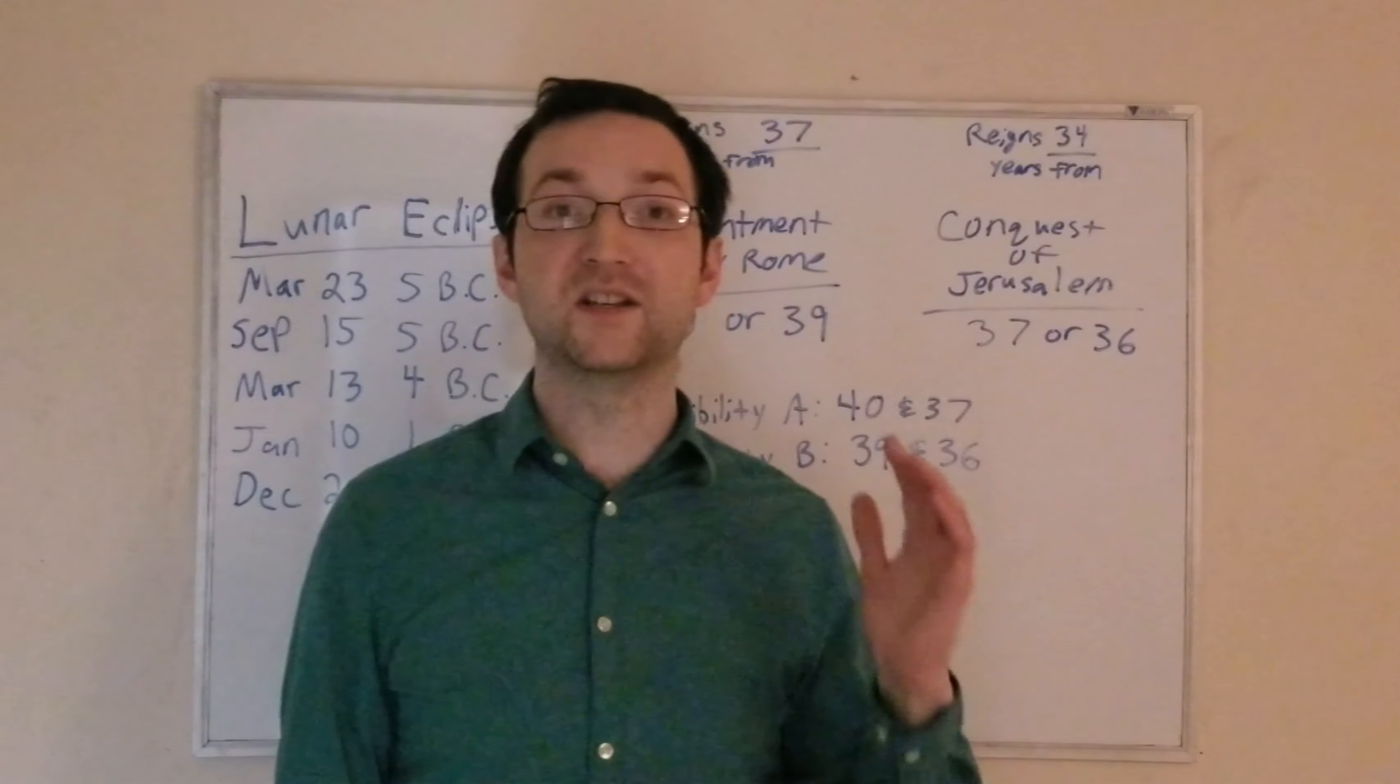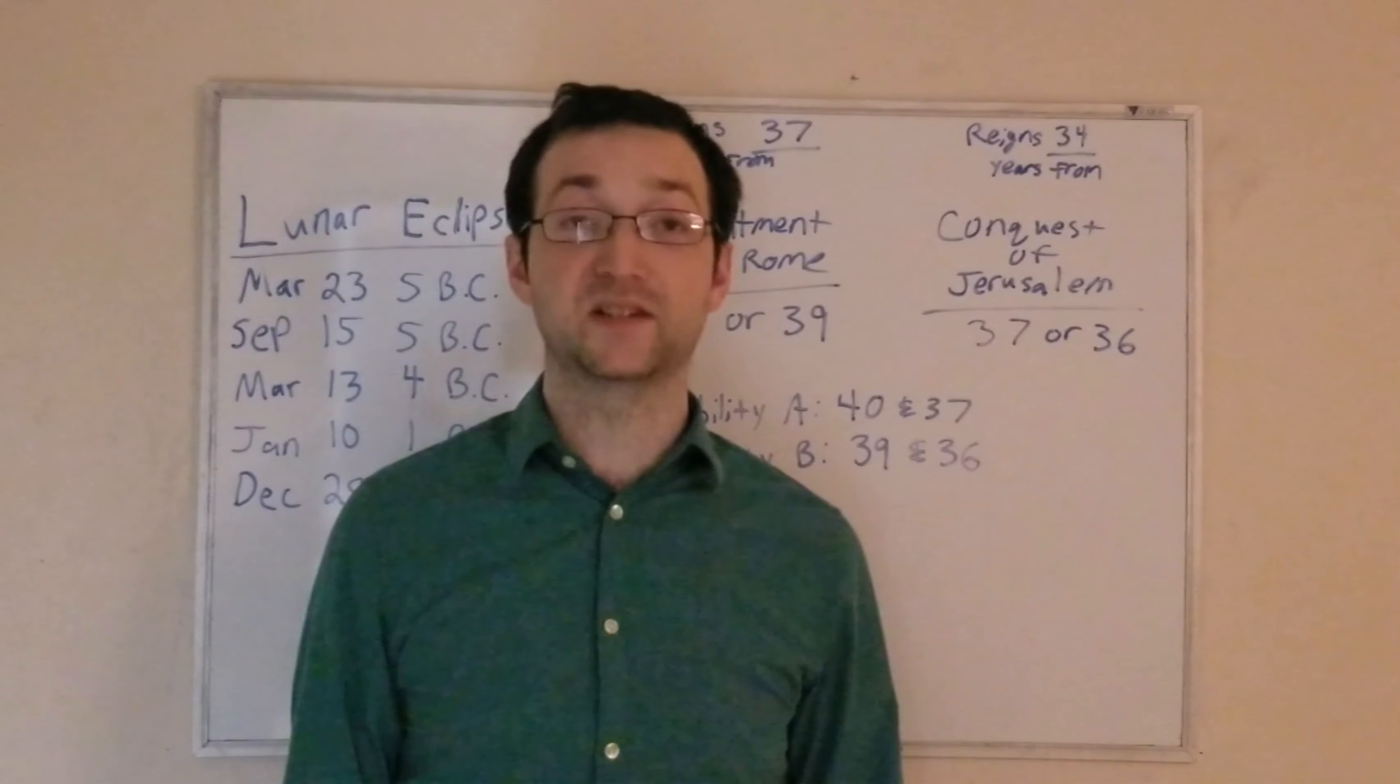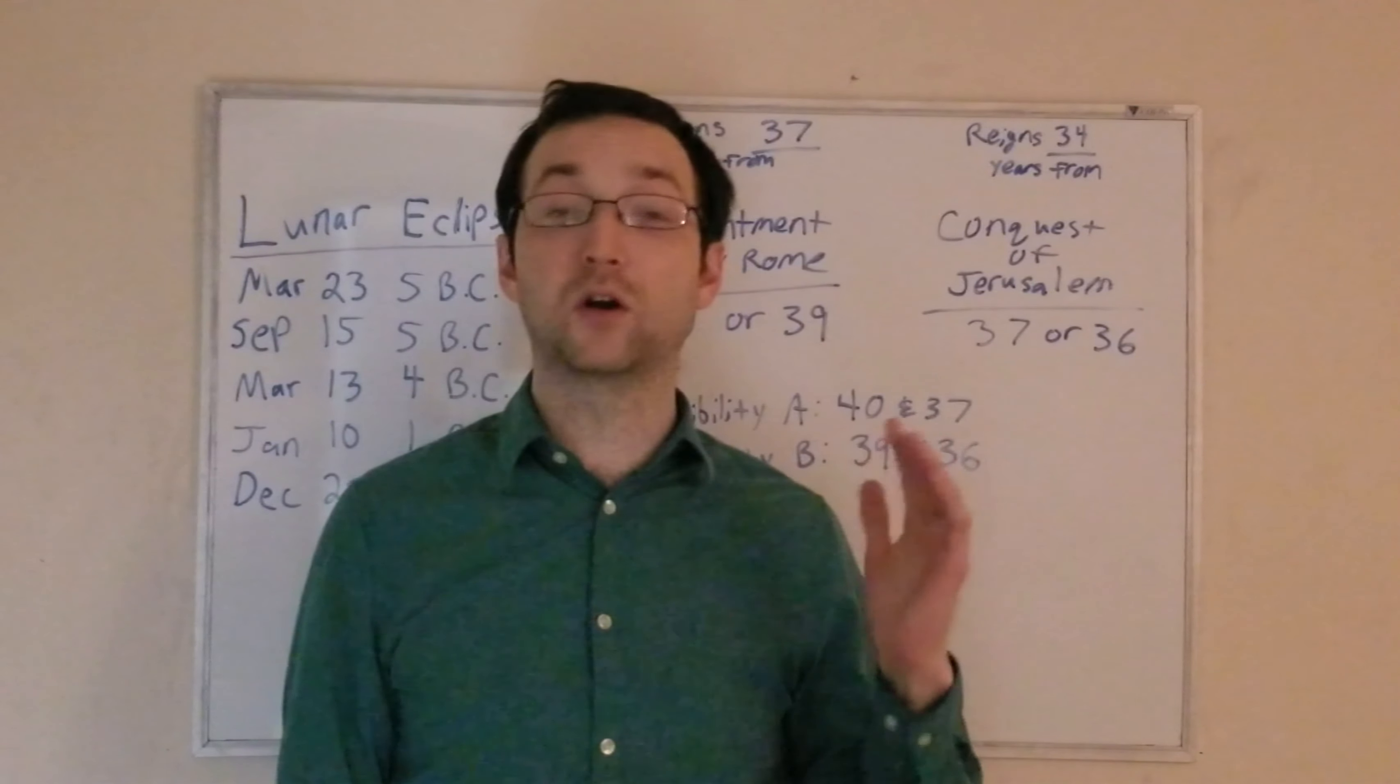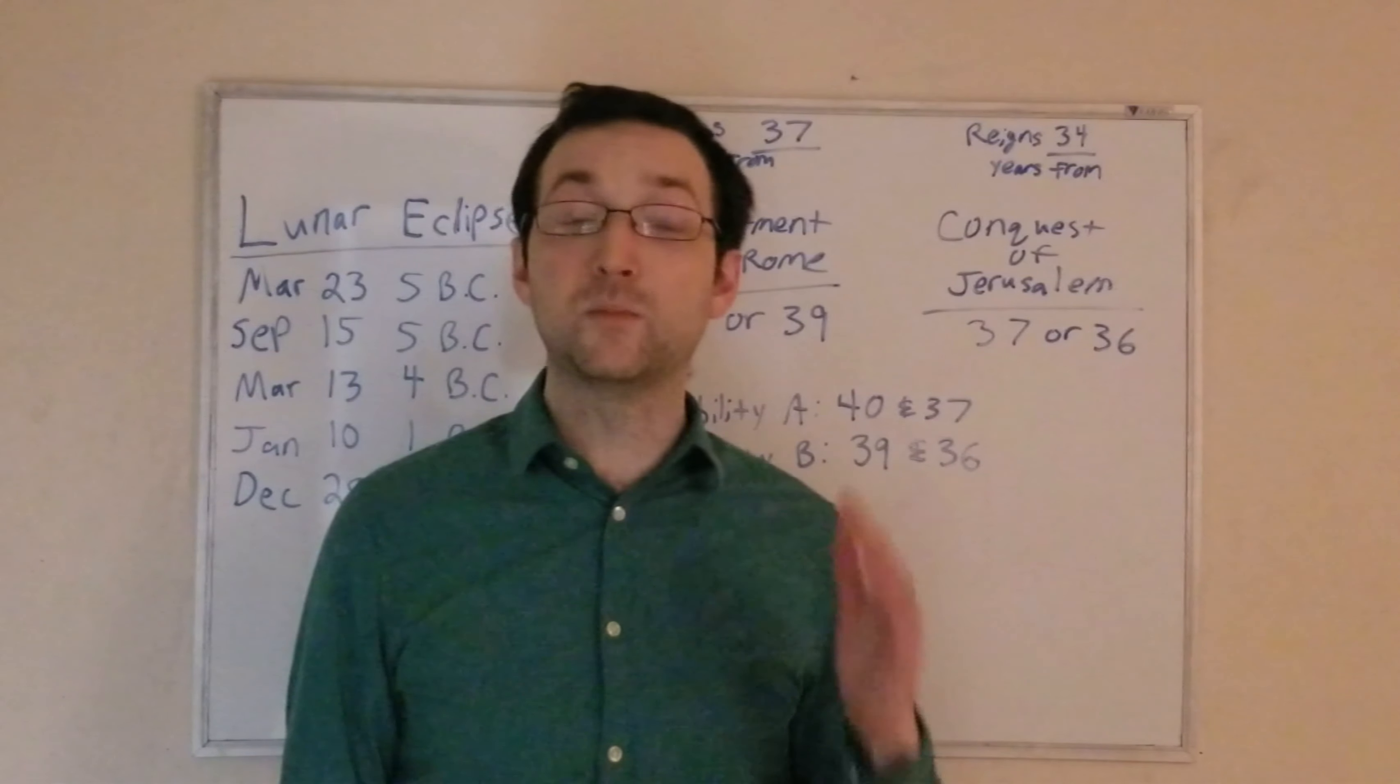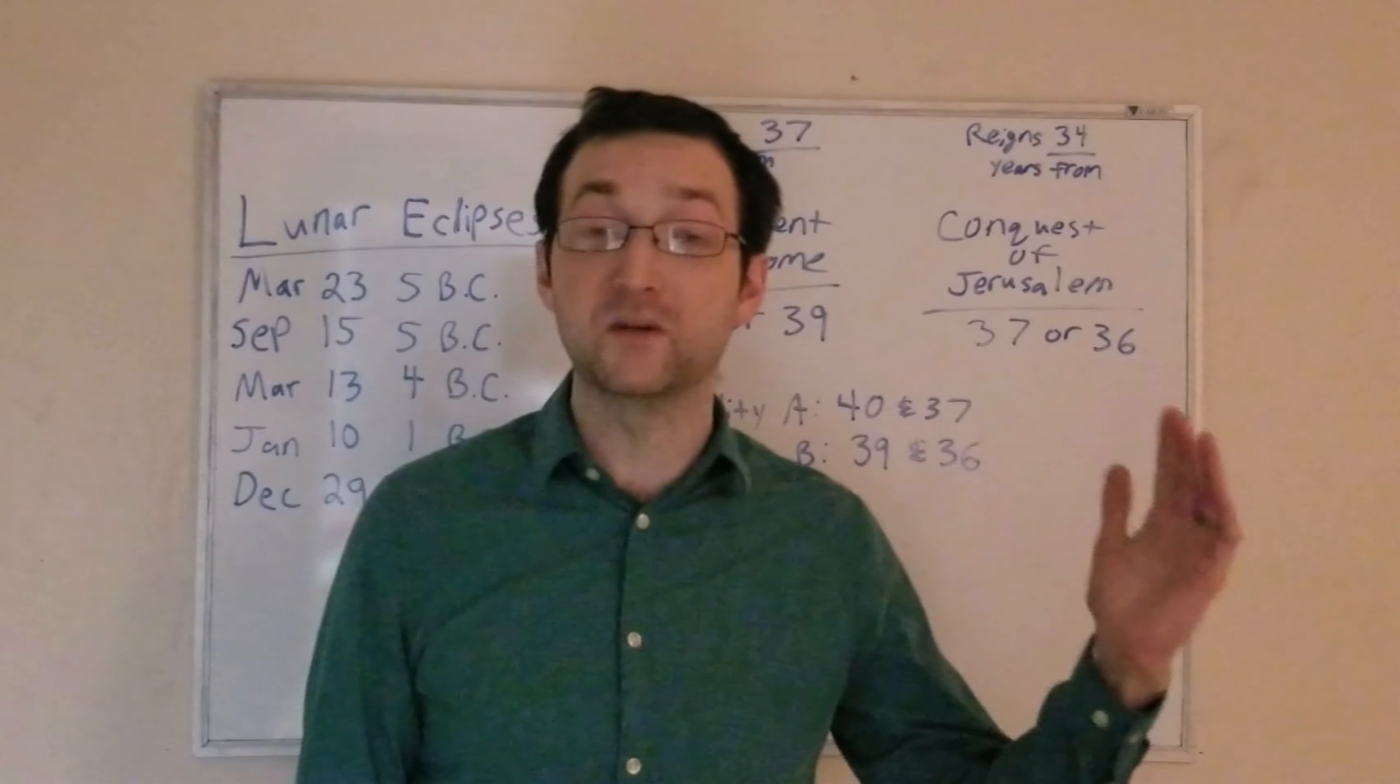Now, how do we know that Herod's sons reckoned their reigns from this time? We know it at least two ways. Number one is coins from Herod Antipas. Antipas, one of Herod's sons, was deposed by Emperor Caligula in AD 39. The latest dated coins from Antipas' reign say year 43. Working backwards, there's no year zero, that would mean that Antipas was reckoning his reign from 4 BC, or some would argue 5 BC.